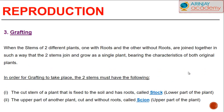In grafting you have the stems of two different plants, one with roots and the other without roots. These are joined together in such a way that the two stems join and grow together as a single plant bearing the characteristics of both original plants. For grafting to take place, the stems must have the following. Firstly, the cut stem of a plant that is fixed to the soil, having roots, is called the stalk, which is the lower part of the plant. Secondly, the part attached to the stalk is called the scion, which is the upper part of the plant and is the stem of another plant.